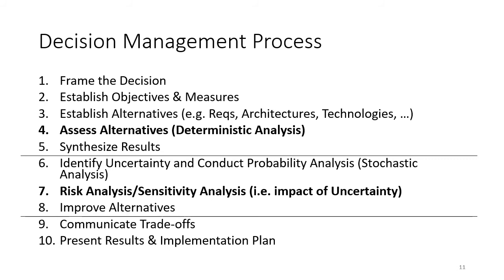Finally, in steps nine and ten, we communicate the tradeoffs, present the results, and develop an implementation plan. To summarize the three phases: first, we frame the decision, establish objectives and measures, and establish alternatives. Then we perform alternative analysis using a deterministic first pass. Once we understand those results, we go deeper by accounting for uncertainty — yielding risk and sensitivity analysis — and then wrap up by communicating and presenting results along with an implementation plan.